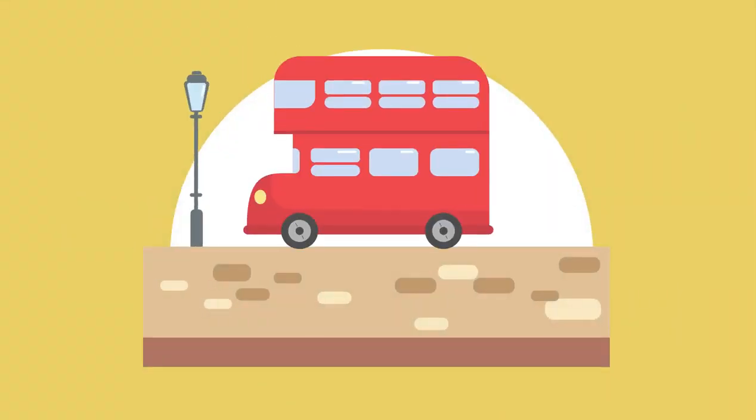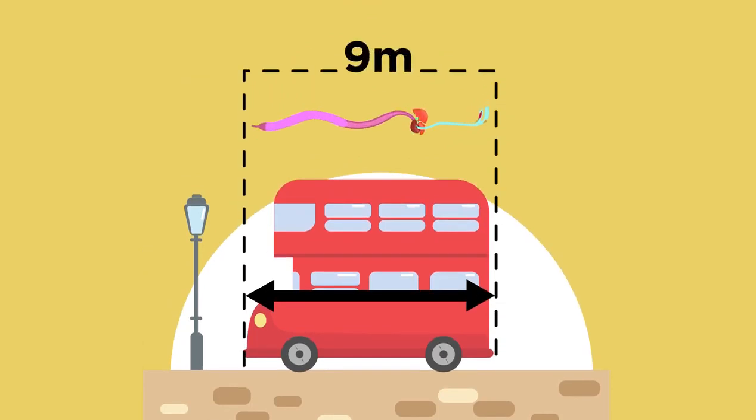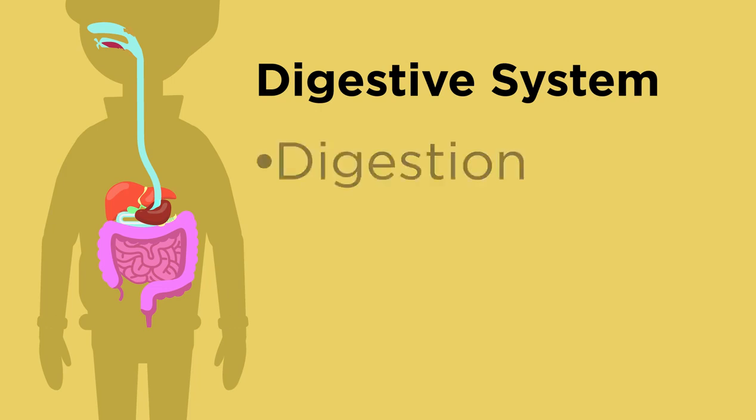Can you believe your digestive system is as long as a bus? Yep, it's about nine meters long, all wrapped up inside your body. A lot of things go on in your digestive system, not just digestion. What else do you think happens?